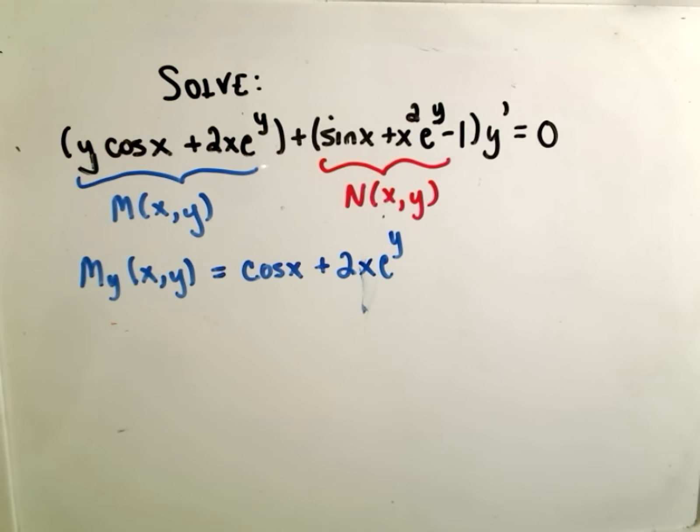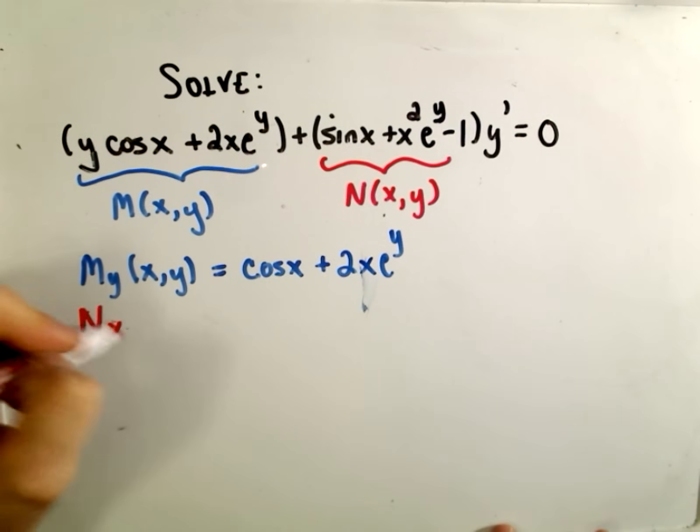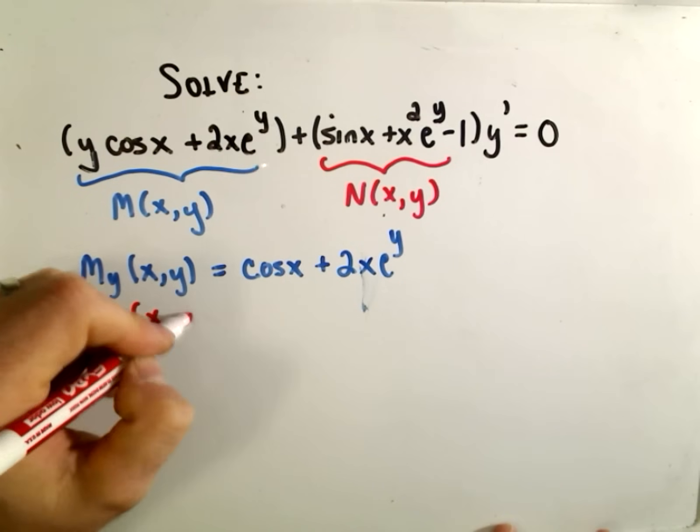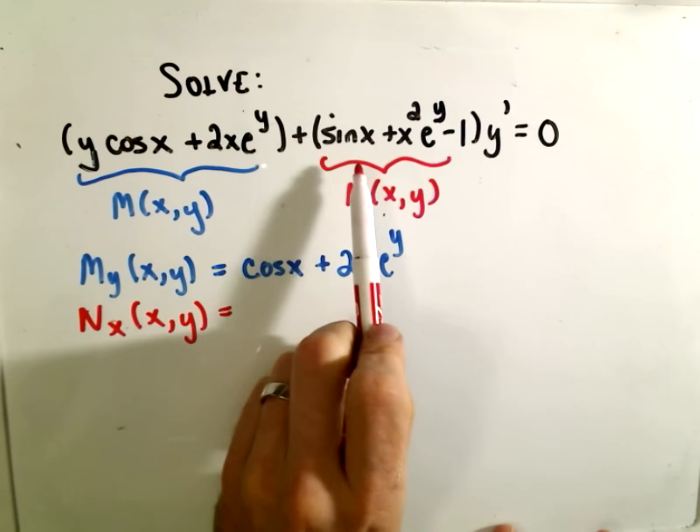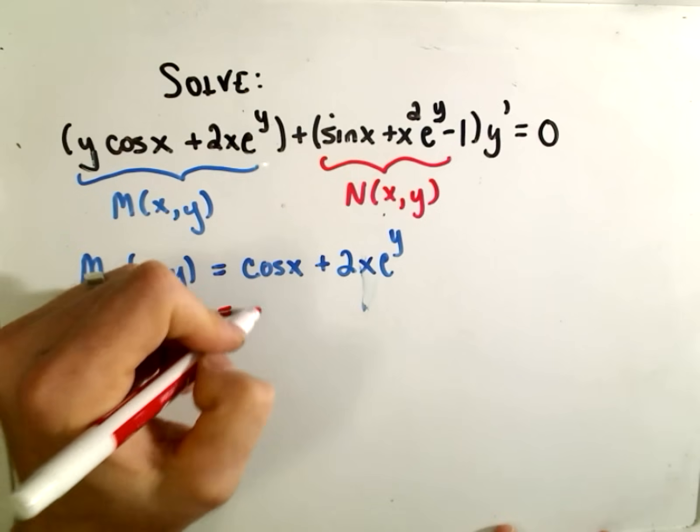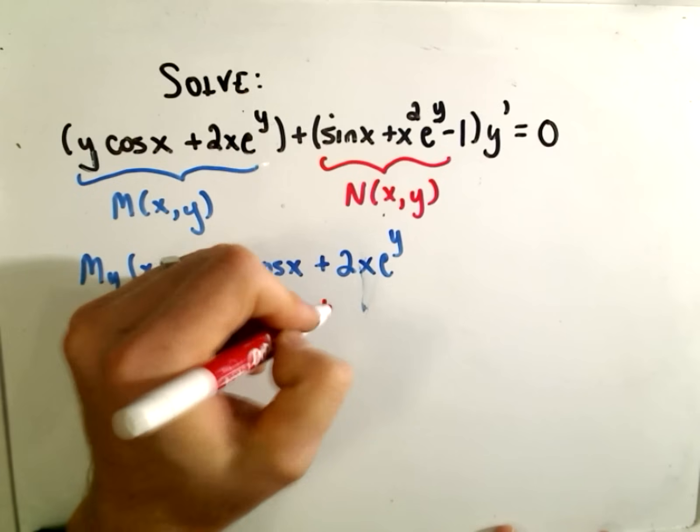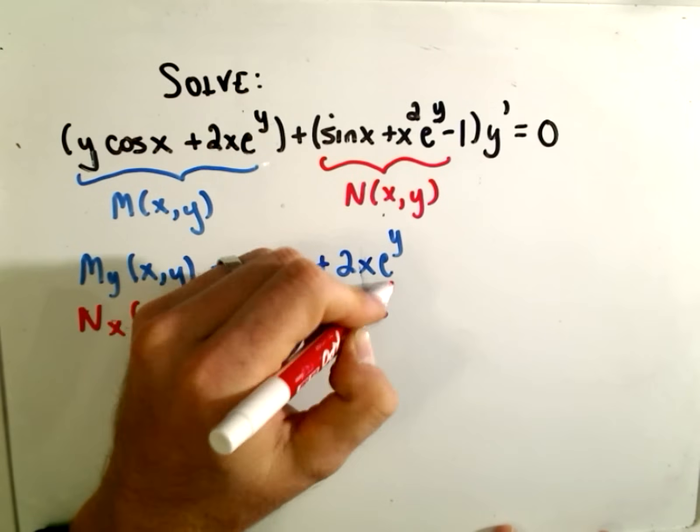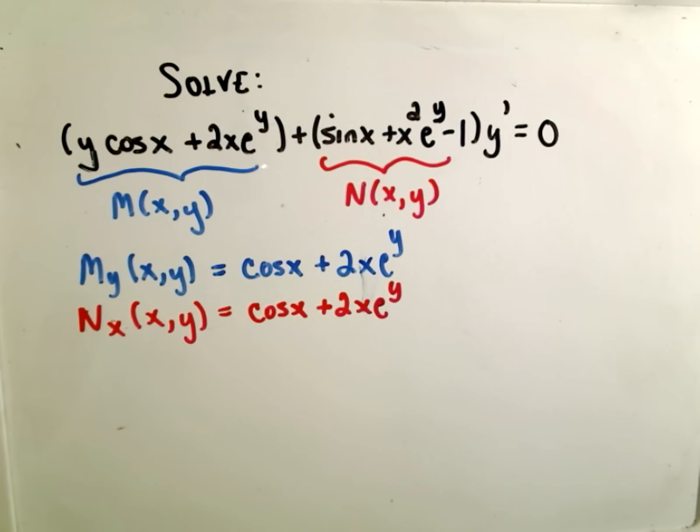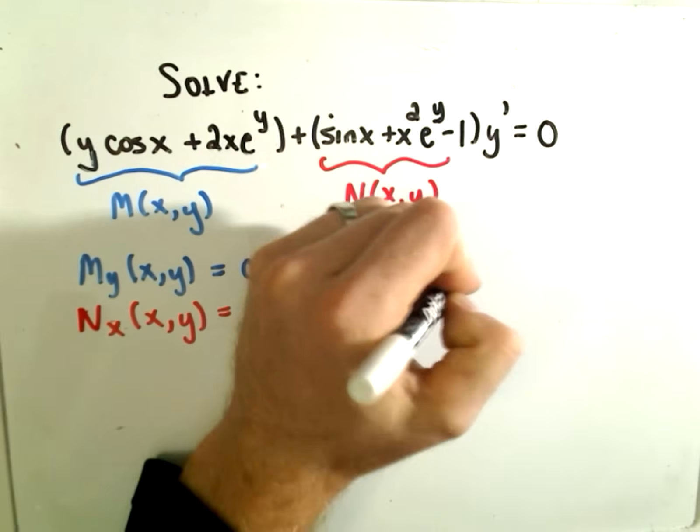And then we have to take the derivative of N with respect to x. And if we take the derivative with respect to x, the derivative of sine is cosine. The derivative of x squared is 2x. And the minus 1 goes away. So, hey, these are equal to each other. This now tells us that this equation is exact.